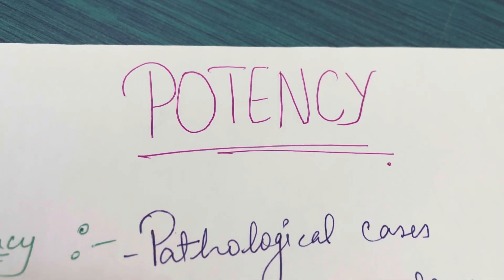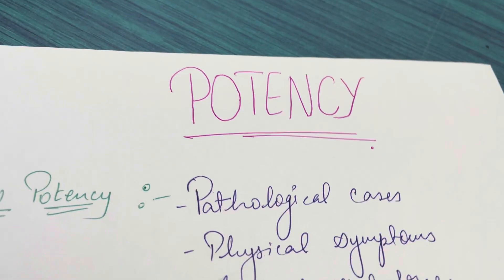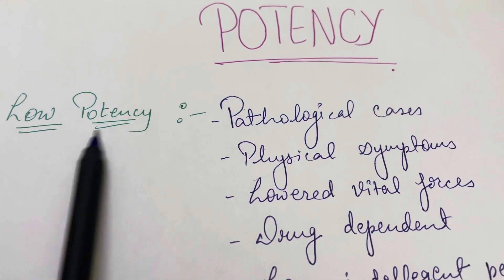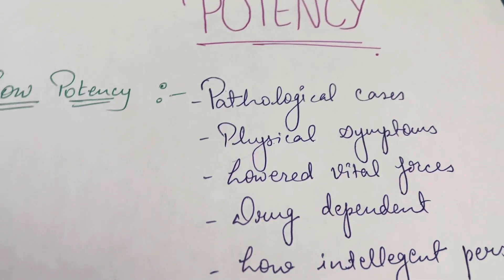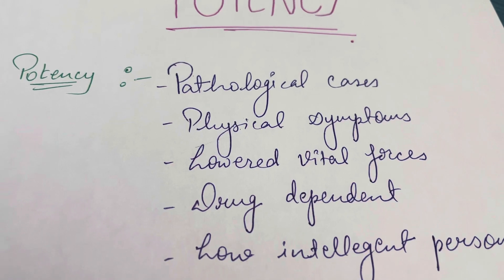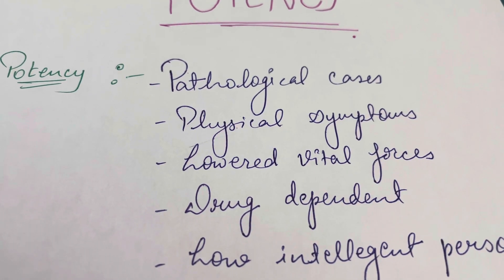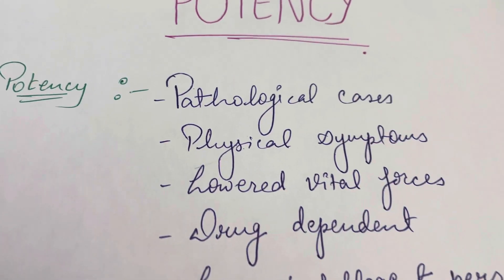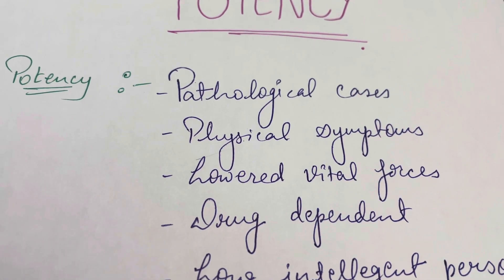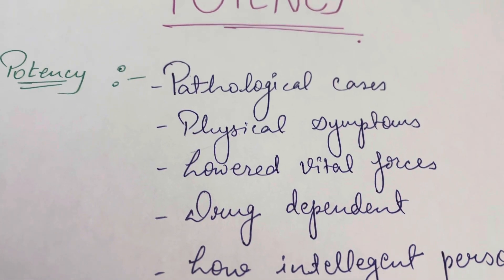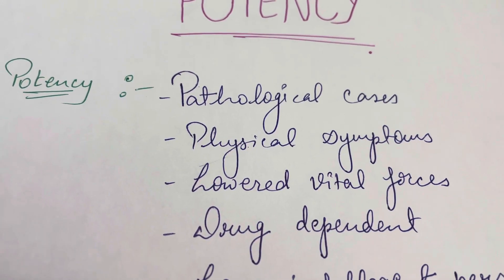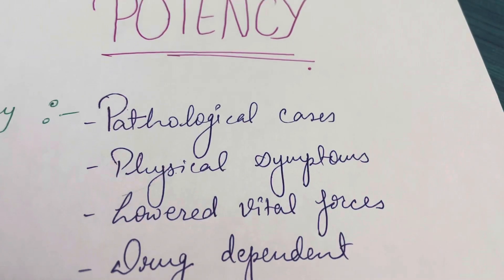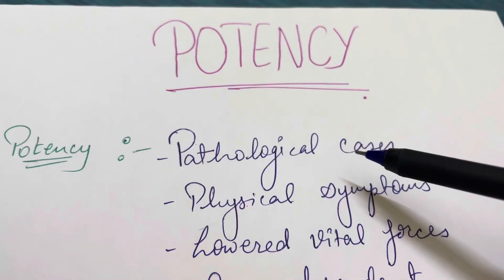Let's begin with today's topic: potency. Firstly, low potency — when do we give low potency? In pathological cases, organ-related cases, where pathology is present and functioning is hampered. These are the types of cases where we mostly give low potency.